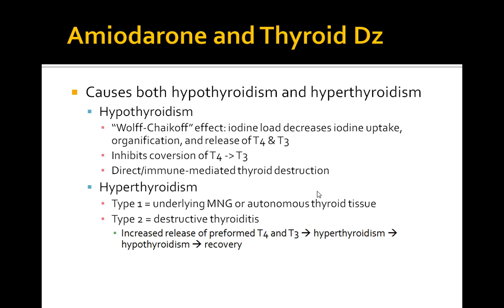Type 1 versus Type 2 are often difficult to distinguish, and sometimes physicians prefer to start treatment for both. In Type 1, it's mainly an underlying multinodular goiter with autonomous thyroid tissue secretion through the Jod-Basedow effect, causing an iodine load which increases synthesis of T4 and T3. Amiodarone-induced hyperthyroidism occurs in about 3% of patients overall and 10–20% in iodine deficient areas.